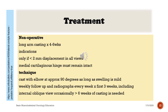Treatment — Non-operative: long arm casting 4 to 6 weeks. Indications: only if less than 2 mm displacement in all views and the medial cartilaginous hinge must remain intact. Technique: cast with elbow at approximately 90 degrees as long as swelling is mild. Weekly follow-up and radiographs every week for the first three weeks, including internal oblique view. Occasionally more than 6 weeks of casting is needed.